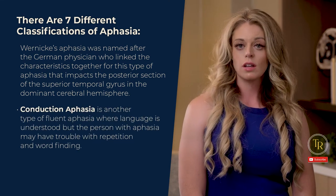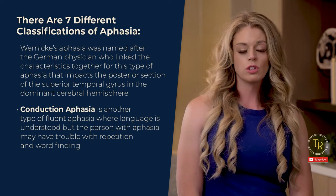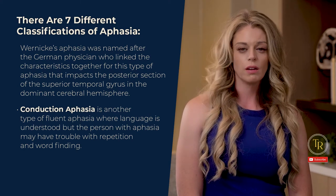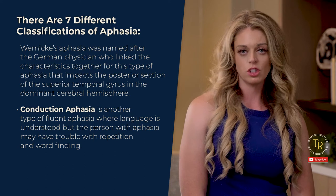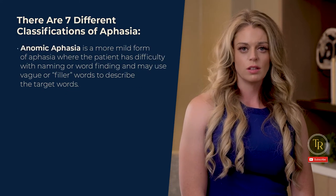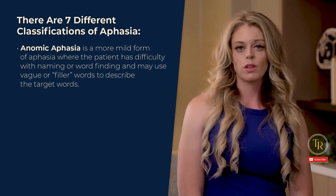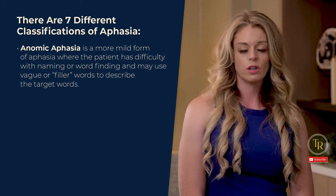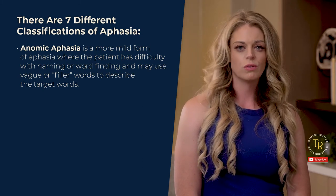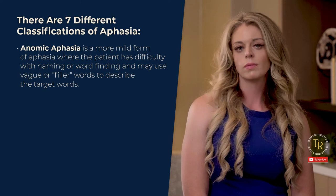Conduction aphasia is another type of fluent aphasia where language is understood, but the person may have trouble with repetition and word finding. Anomic aphasia is a more mild form of aphasia where the patient has difficulty with naming or word finding and may use vague or filler words to describe the target words.